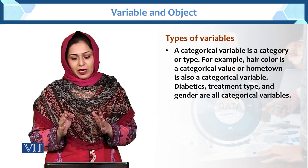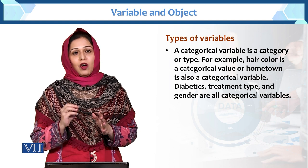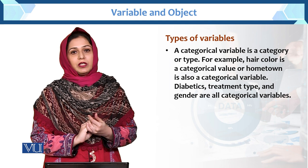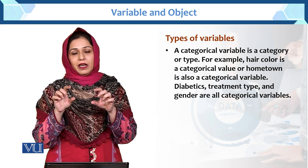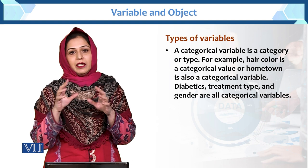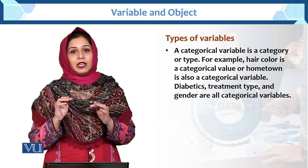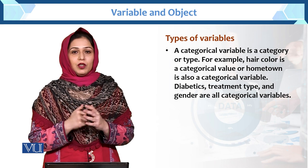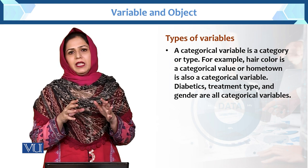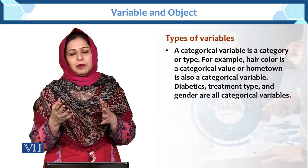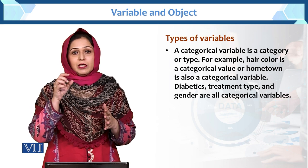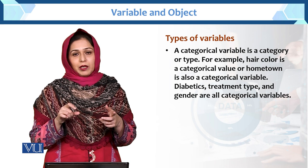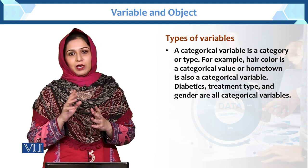These are the types of variable — categorical variable and the numeric variable. The categorical variable is the category or type. Previous example mein maine aapko grades of students ki example li thi. Ab grades of student — it means ke yeh uski categories hongi: A grade, B grade, C grade — categories aa rahi hain, to this is called the categorical variable. Agar maine percent mein baat ki hoti — 80%, 90%, 70% — toh yeh numeric hota, but maine grades ki baat ki hai, it means ke yeh categorical variable hai.